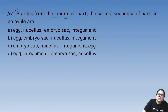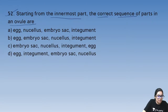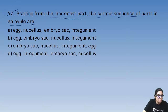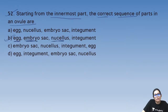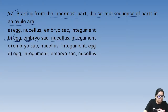Question 52: starting from the innermost part, the correct sequence of parts in the ovule — the egg is inside the embryo sac, nucellus surrounds it, and the integument covers that. The answer is B.